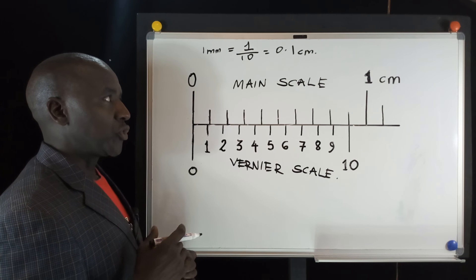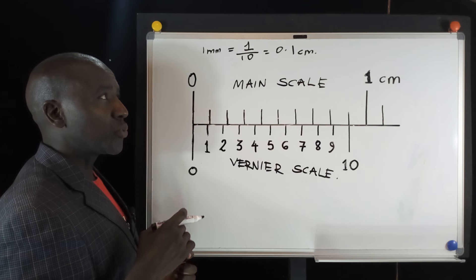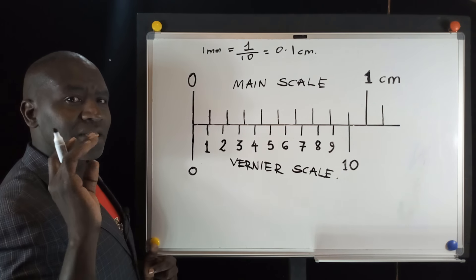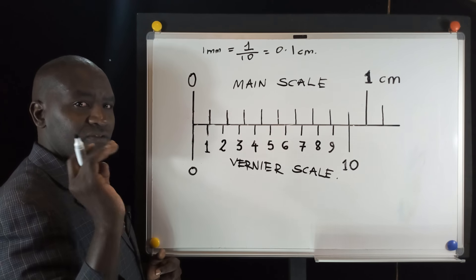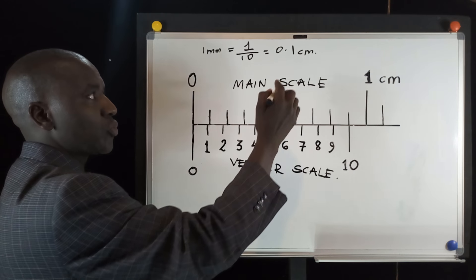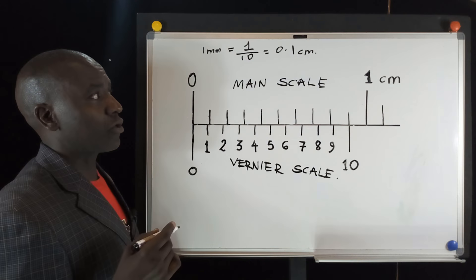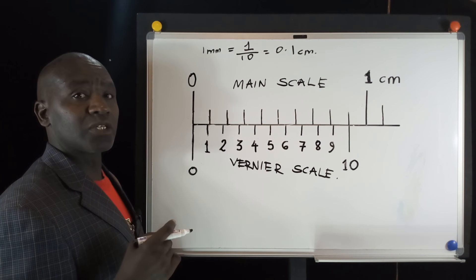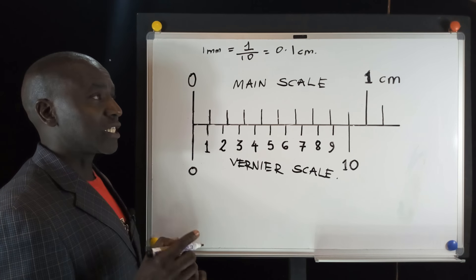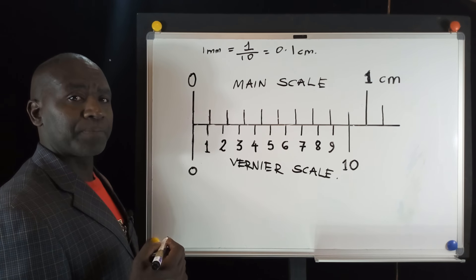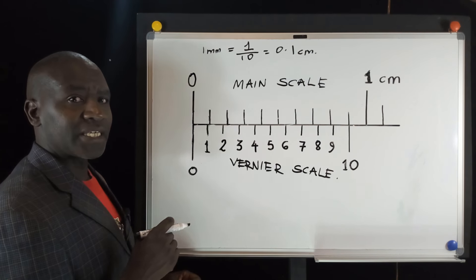Now, is it possible to divide that 0.1 centimeter into ten equal divisions that are visible to the naked eye? That is very difficult — it's not possible to see it. If I divide this by a further 10 to get 0.01 centimeter, it will not be visible and therefore cannot be read accurately. That is why we need to introduce the idea of the Vernier scale.